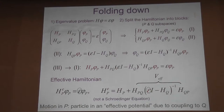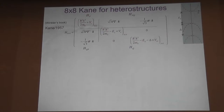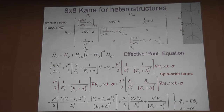We perform a Löwdin transformation - a unitary transformation - to eliminate the hole block, which is coupled to the electron band via the K·p terms. I end up with a two-by-two Hamiltonian. Starting from the 8x8 K·p Hamiltonian, I eliminate the hole subspace and get an effective two-by-two electron Hamiltonian plus a V-effective term that describes the coupling between electron and hole sectors - that's the physical origin of the spin-orbit interaction.